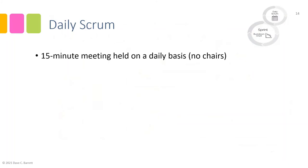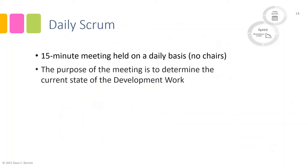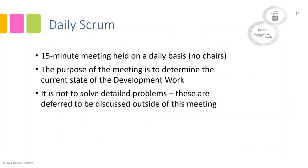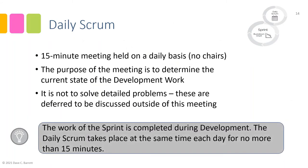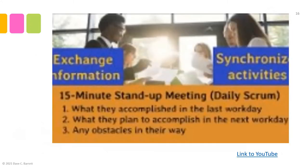A key aspect of development work is the daily scrum — a 15-minute meeting held every day. There are no chairs; it is often called a daily stand-up meeting. The purpose is to determine the current state of the development work. It is not the place to solve detailed problems — those are deferred to be discussed outside the meeting. The work of the sprint is completed during development, and the daily scrum takes place at the same time each day for no more than 15 minutes.